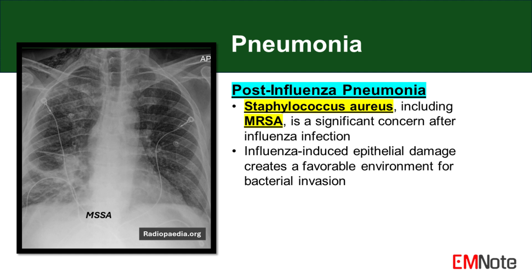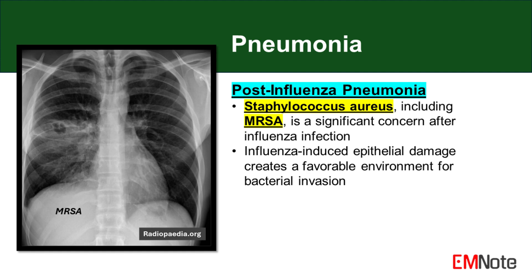Staphylococcus aureus, including methicillin-resistant strains (MRSA), is a significant concern in post-influenza pneumonia. The influenza virus causes damage to the respiratory epithelium, impairs mucociliary clearance, and alters immune responses, creating a favorable environment for bacterial invasion.